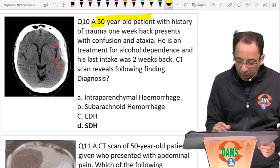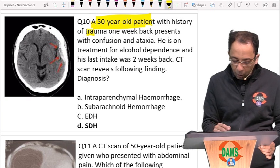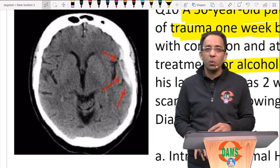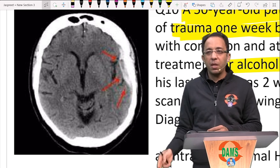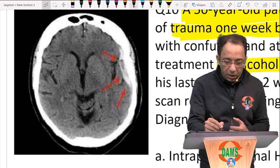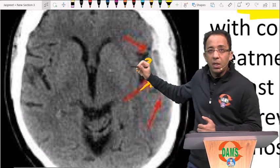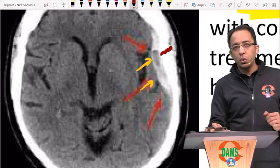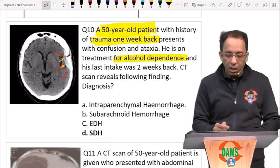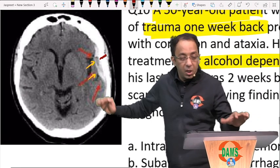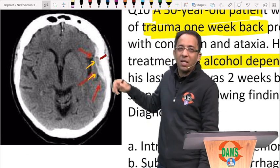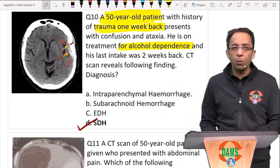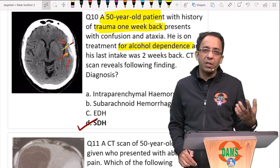This question confused many people: an old alcoholic patient with trauma one week back and a hemorrhage on imaging. The hemorrhage appears to cross the suture line. If it crosses the suture line, it cannot be extradural. In alcoholics and elderly people after remote trauma, always think subdural hemorrhage — due to rupture of bridging veins. The bone appears slightly bent making it look convex, but this is a typical subdural, not extradural hemorrhage.